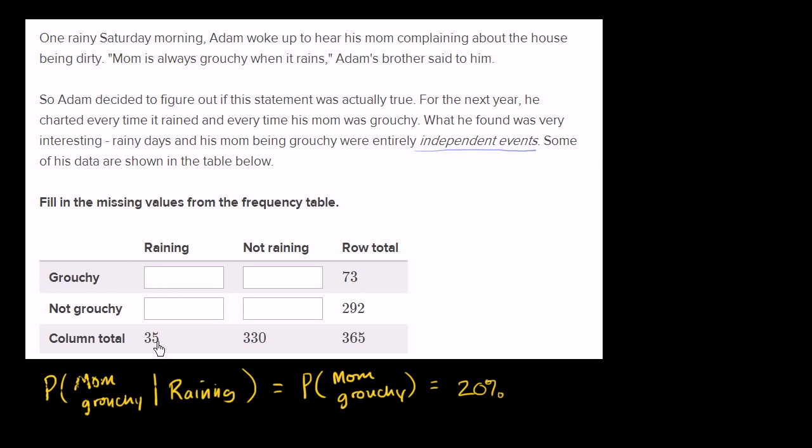So what is 20% of 35? Well, 20% is one-fifth. One-fifth of 35 is seven. And once again, all I did is I said 20% of 35 is seven. And if that's seven, then 35 minus seven, that's going to be 28 right over there.